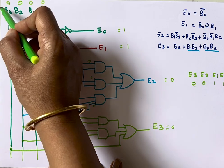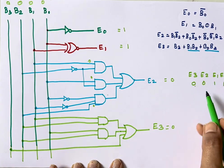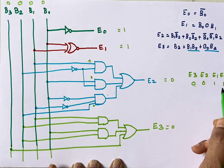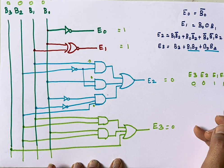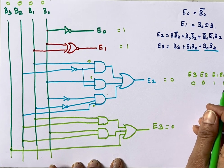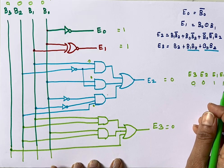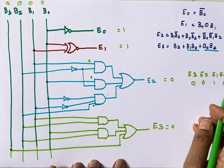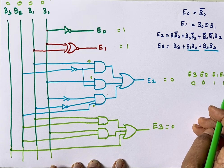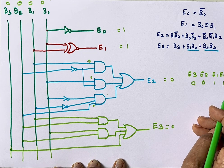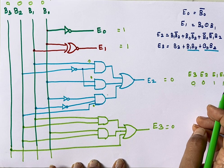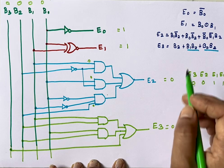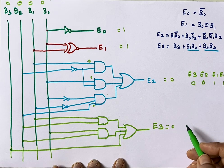You can apply any BCD value and find its XS3 equivalent using this circuit. I hope this video is useful to you. Thank you so much for watching — do share it with your friends and colleagues, and don't forget to subscribe to my channel.